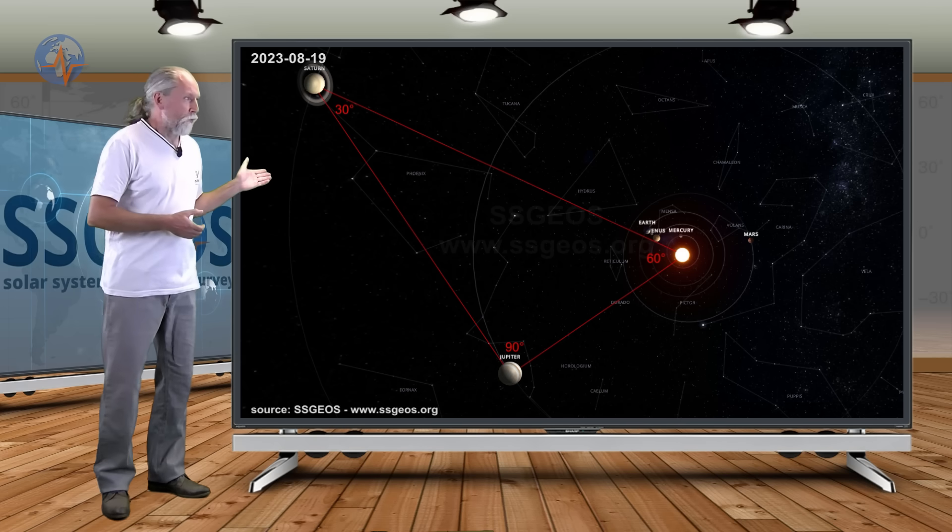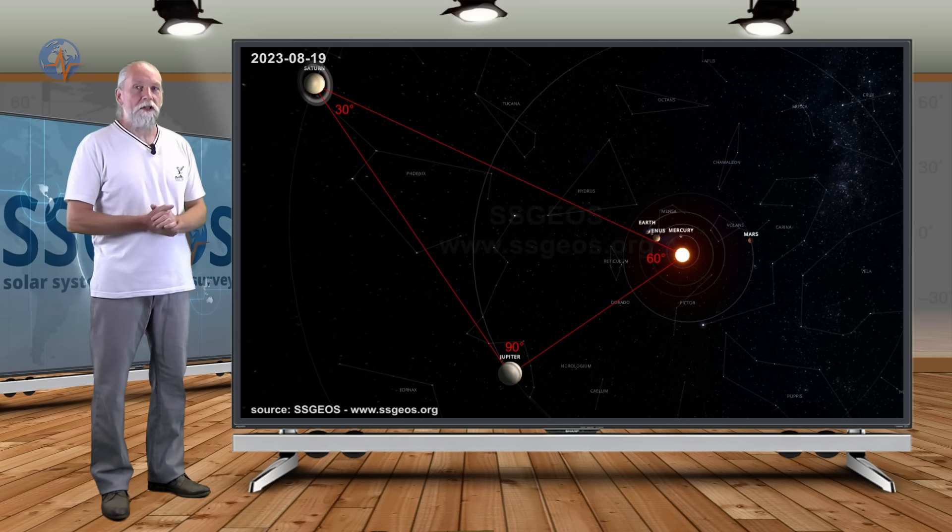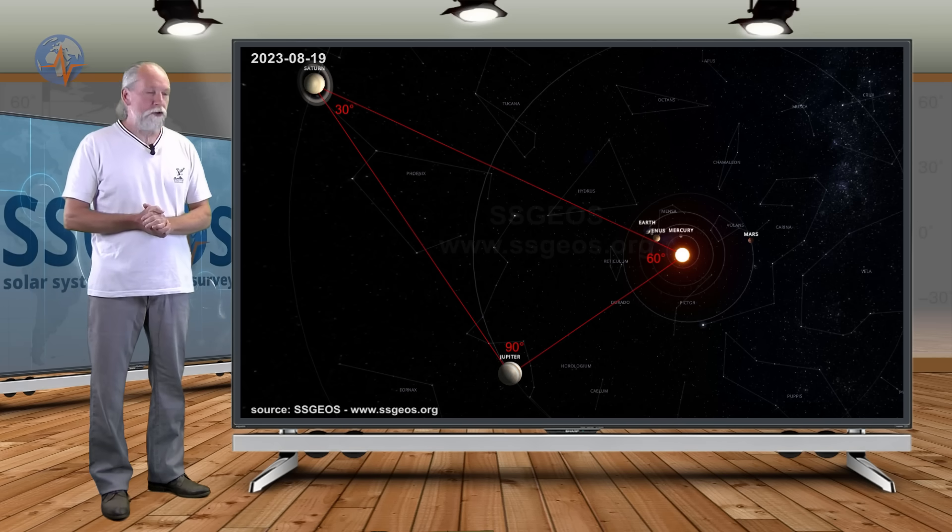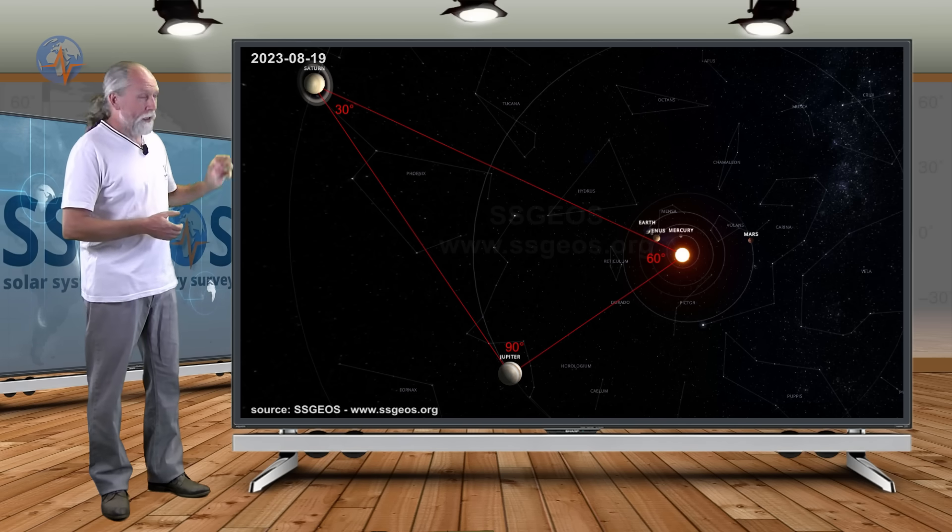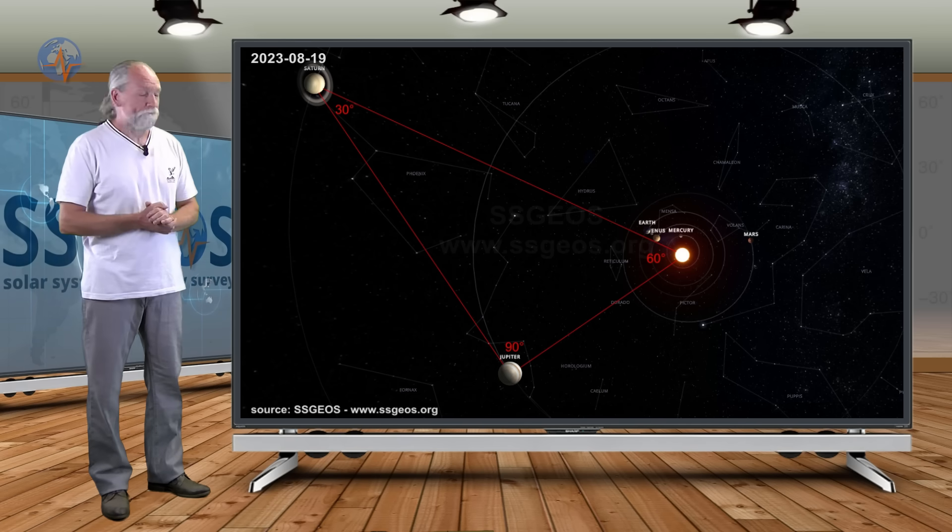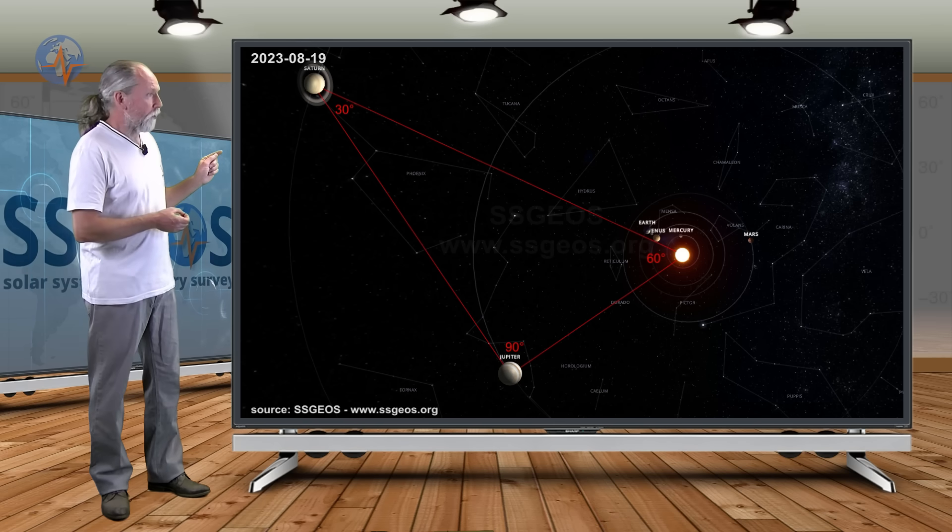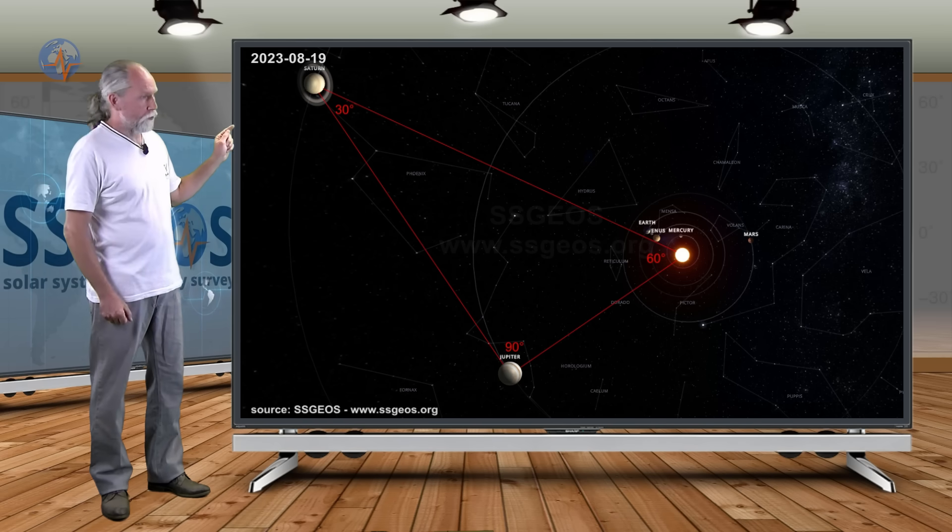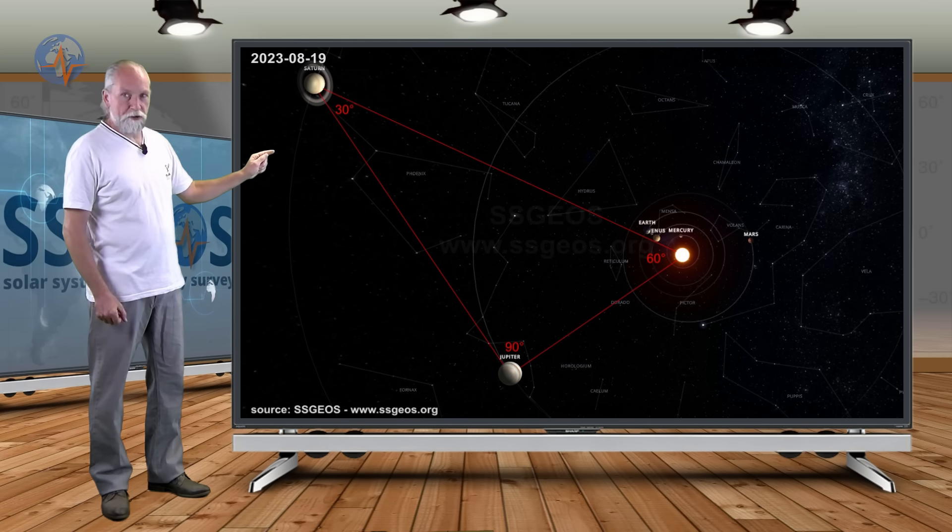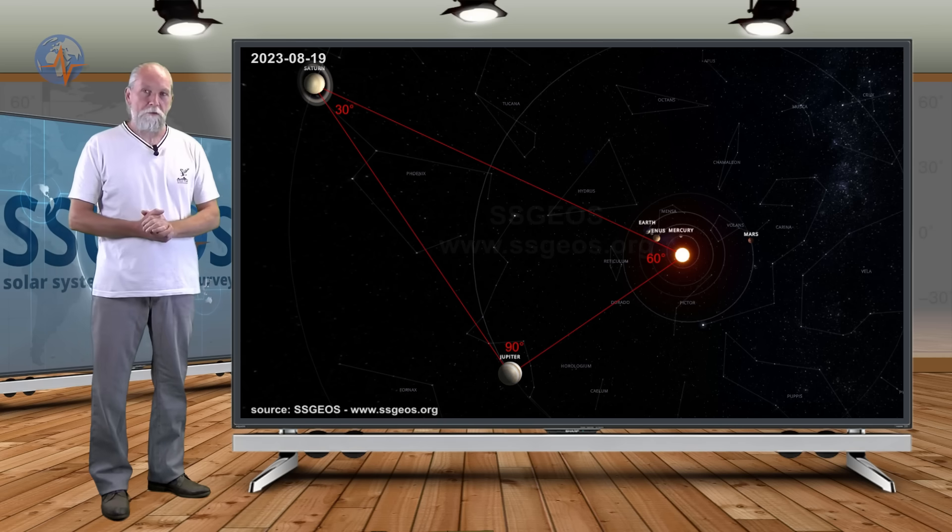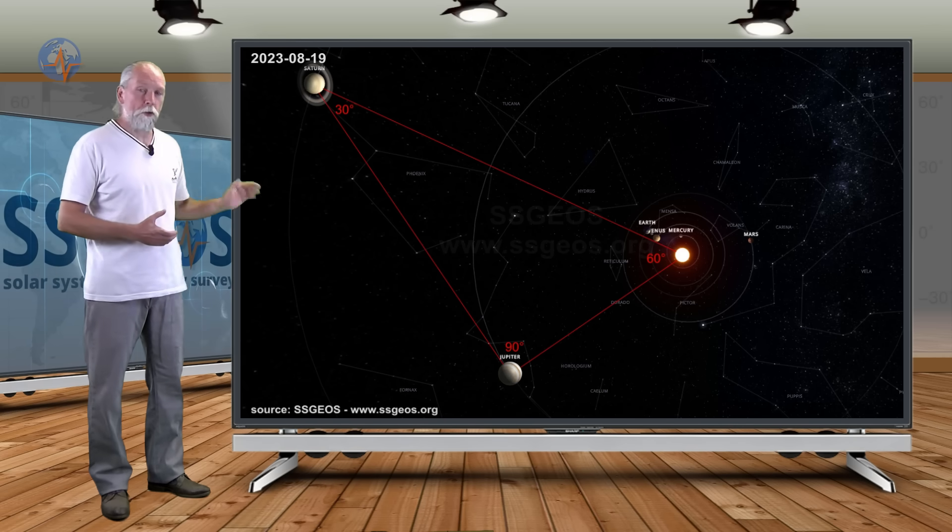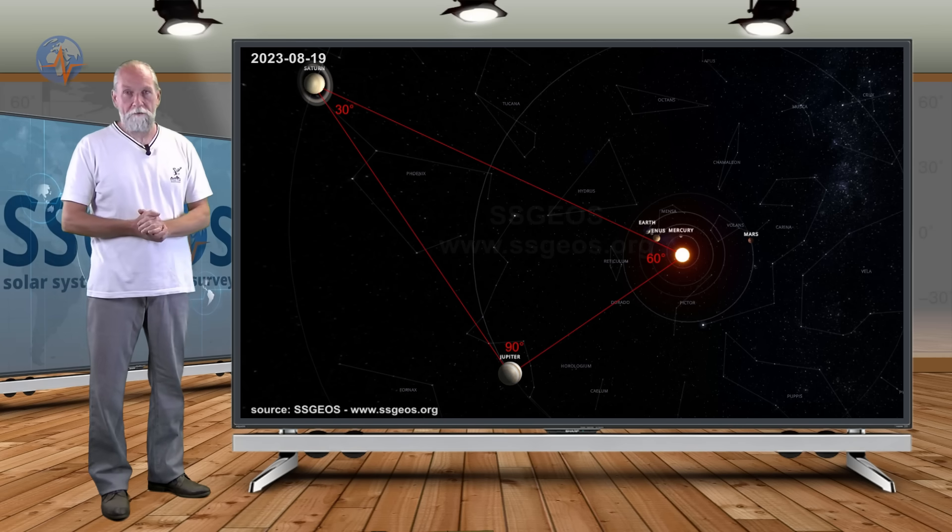And what that will add to the geometry, that is not certain. But it is pretty unique that we have this beautiful angle, right angle triangle in the solar system. Again, the 30 degree angle with Saturn, the 60 degree angle with the Sun, and the 90 degree angle with Jupiter. Very interesting geometry on top of the critical geometry that we already have in the coming week.